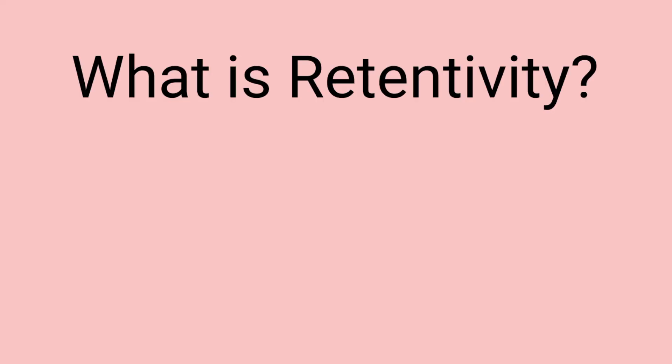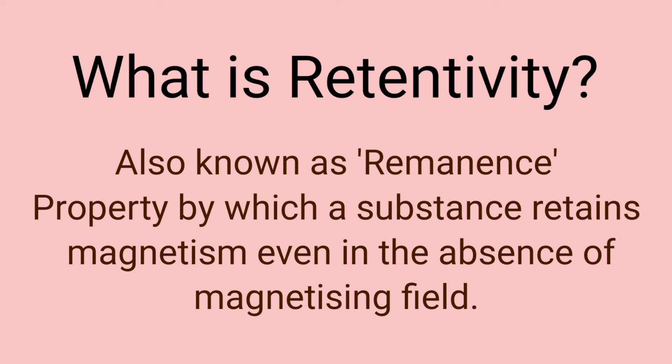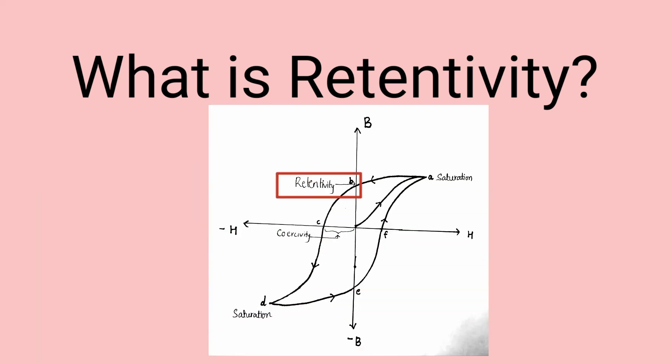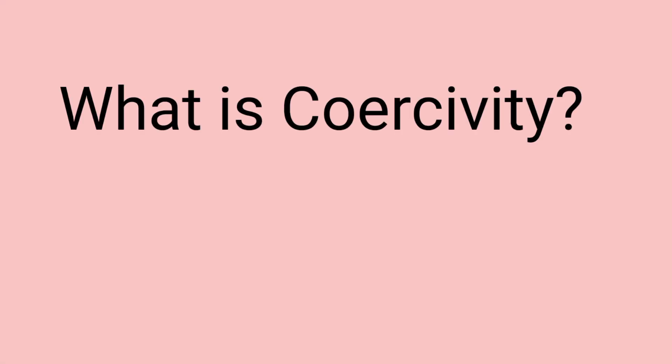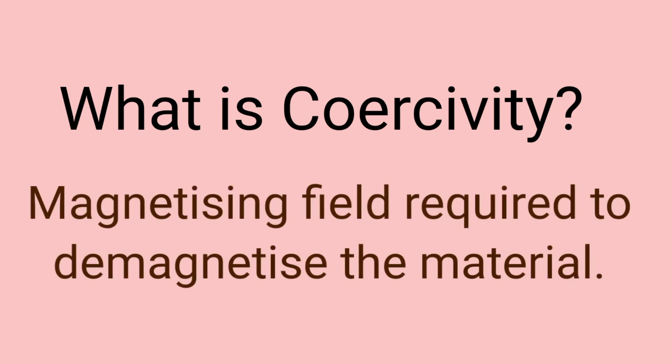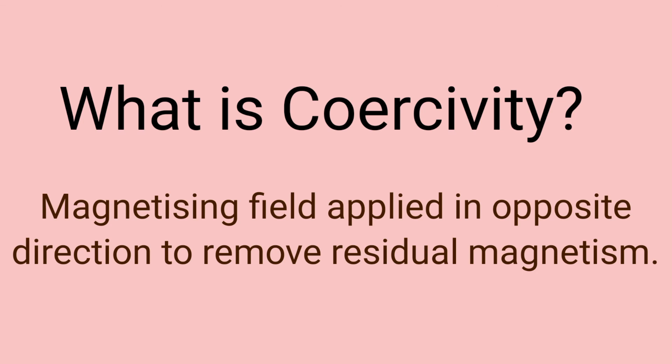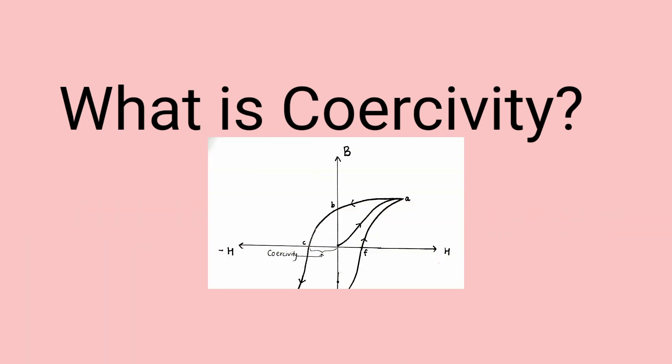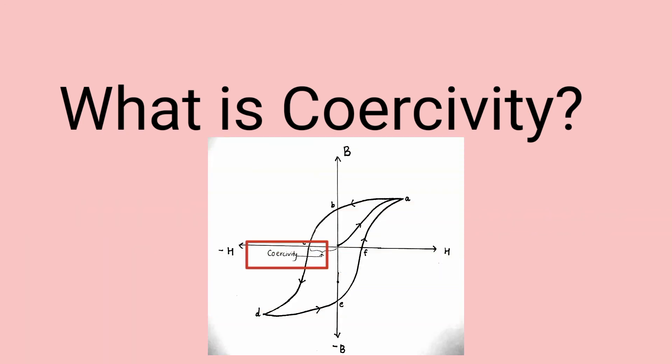What is retentivity? Also called remanence, it is the property by virtue of which a substance retains its magnetism even in the absence of the magnetizing field, as seen in the graph. What is coercivity? The magnetizing field required to demagnetize the material is called coercivity. In other words, the magnetizing field applied in the opposite direction to remove the residual magnetism is called the coercive field, and the property is known as coercivity.